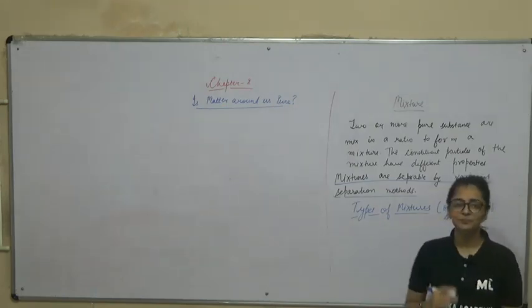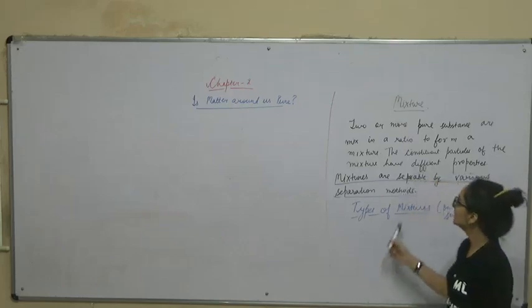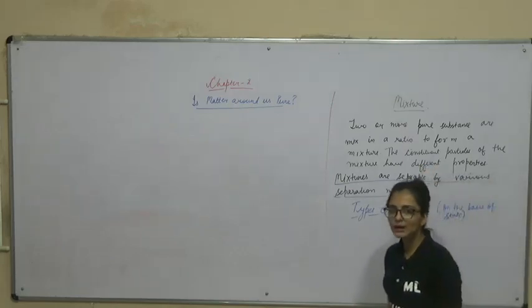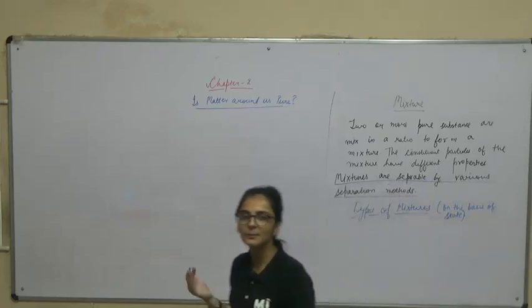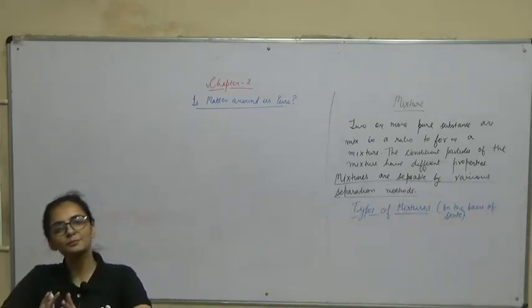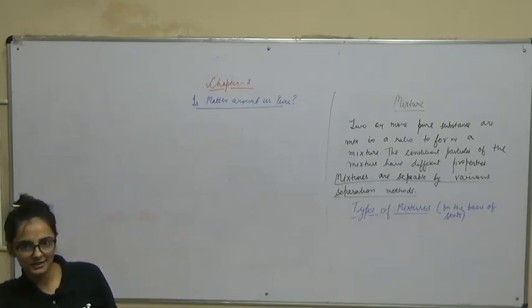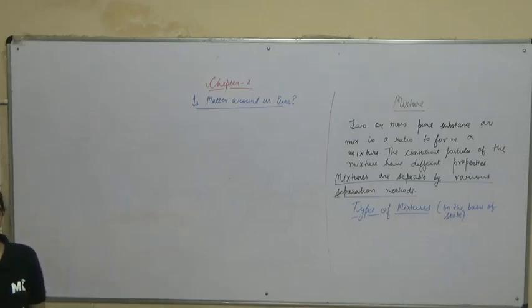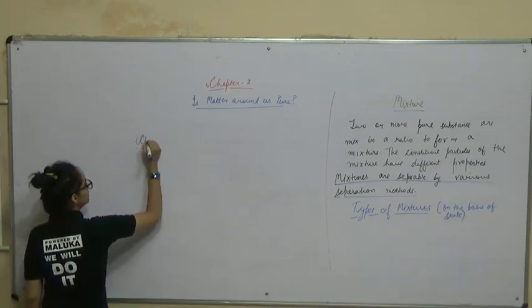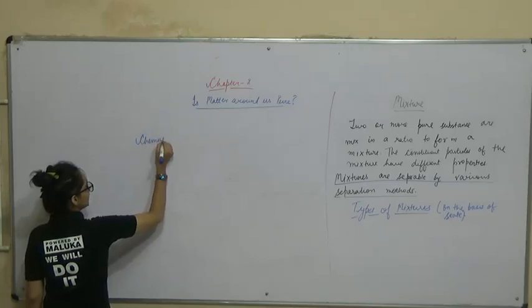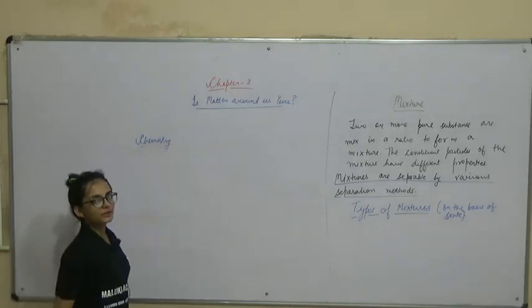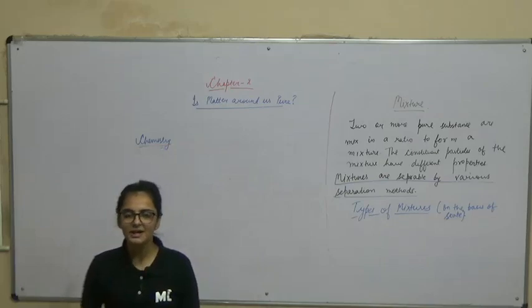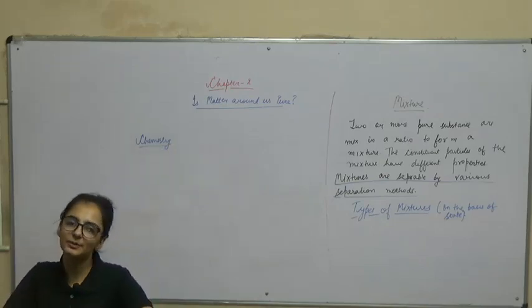In the last lecture we discussed that when two or more pure substances mix in a ratio, they make a mixture. In this lecture we are going to talk about the types of mixtures. We are starting with the subject chemistry, and in chemistry we talk about chemical reactions.